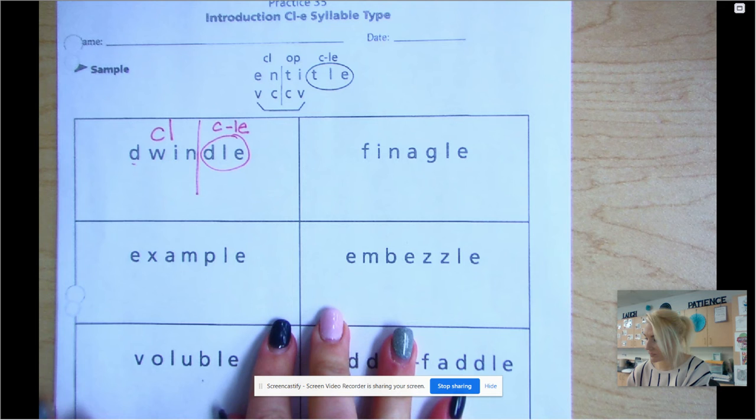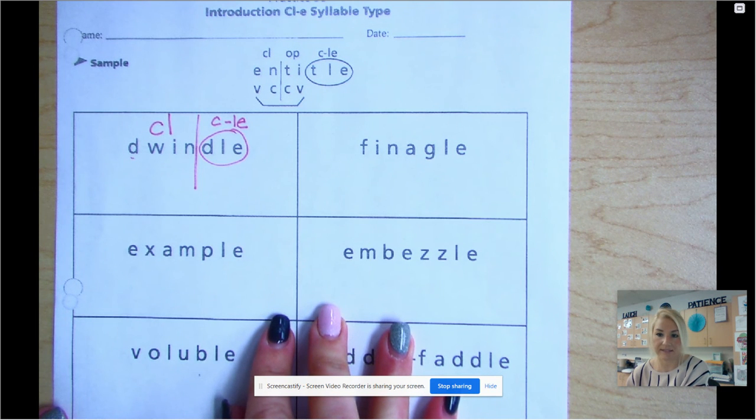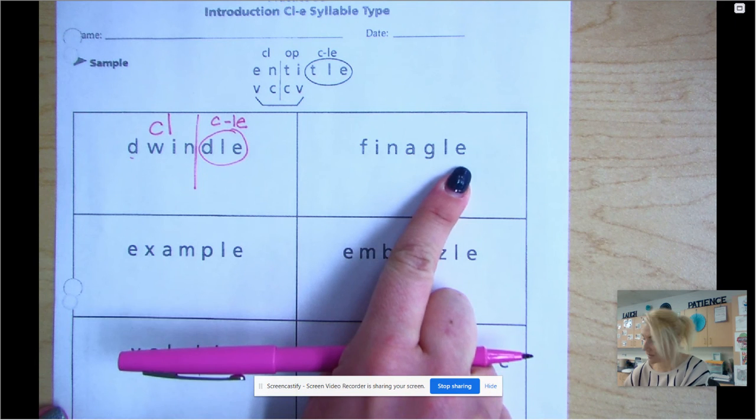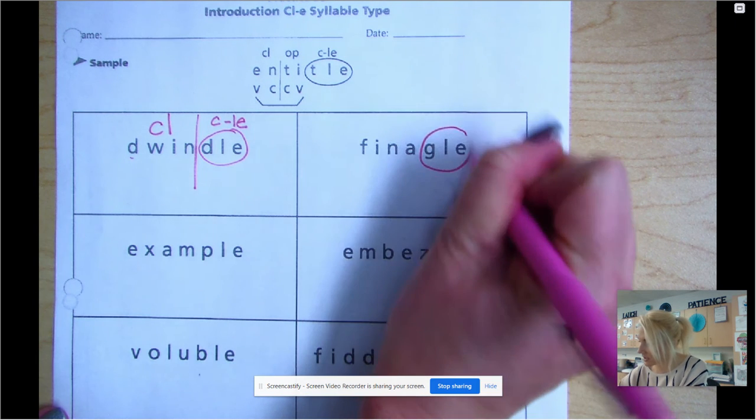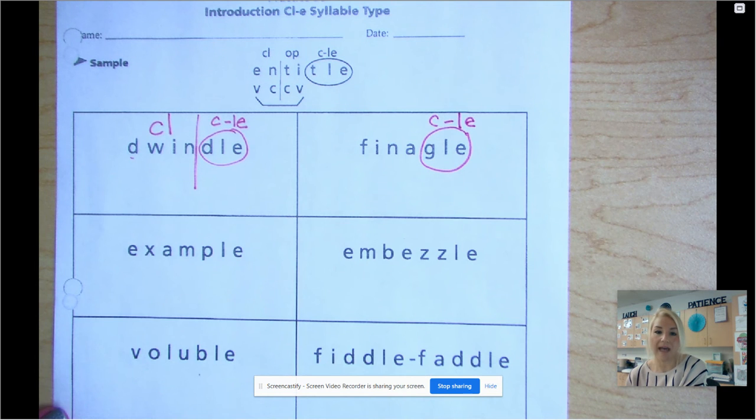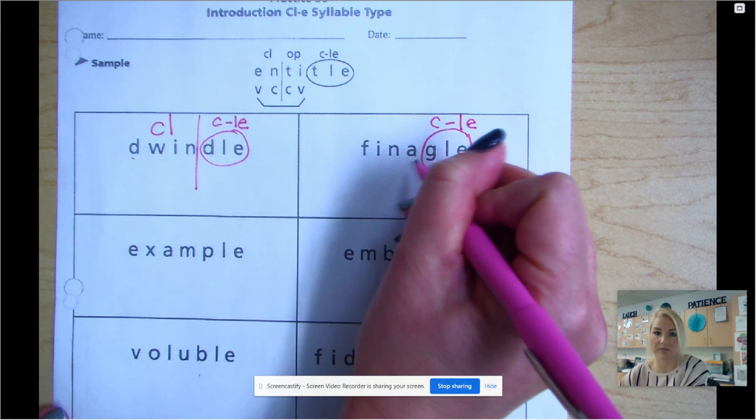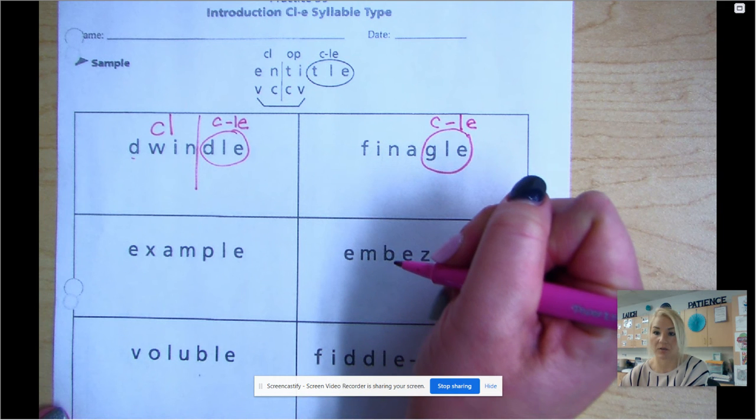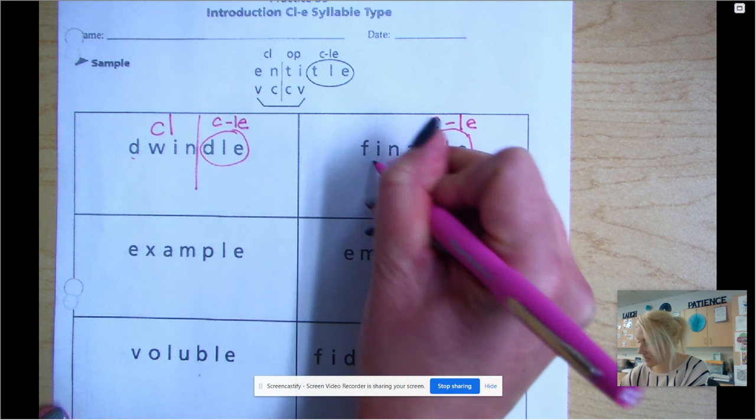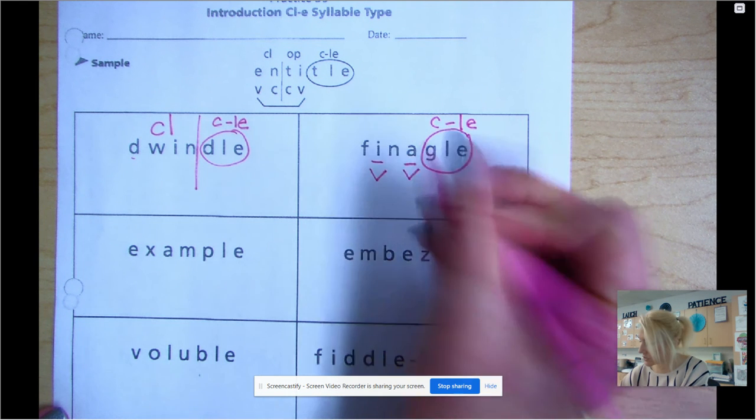Our next word. The first thing I'm going to do is label my consonant-LE. It has a G and then LE, so I'm going to go ahead and circle consonant L-E. And now I'm going to go ahead and start finding my vowels. Label my bridge. Label the consonants, and so on and so forth. So this one has two vowels, so I can go ahead and continue syllabicating. So I have an I and an A.